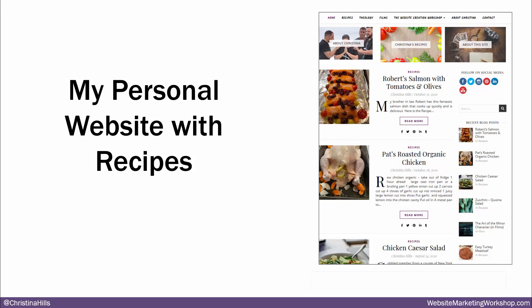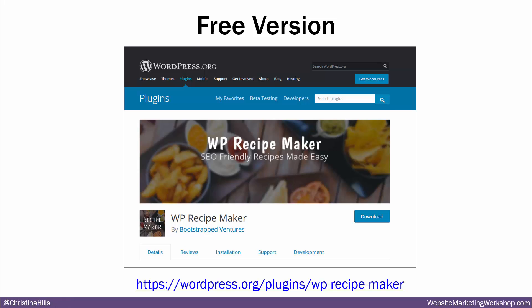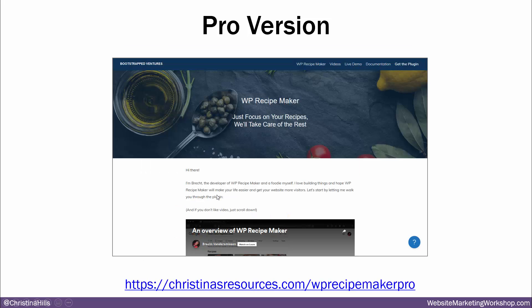My personal website — this is a screenshot here — I'm using the free version, and I'll talk a little bit about the differences. The plugin we're going to be using is called WP Recipe Maker. It is very, very popular, and I'll be showing you exactly how to install it. There's the free version, which you can find at WordPress.org, and then there's a pro version at christinasresources.com/WP-Recipe-Maker-Pro. We'll put that link in the chat if you want the pro version.